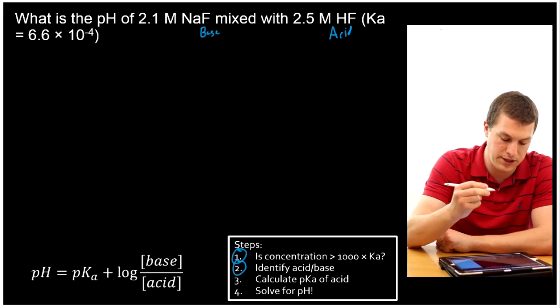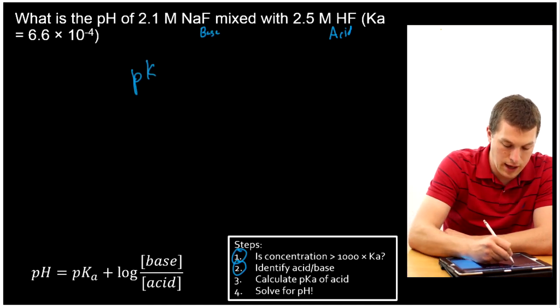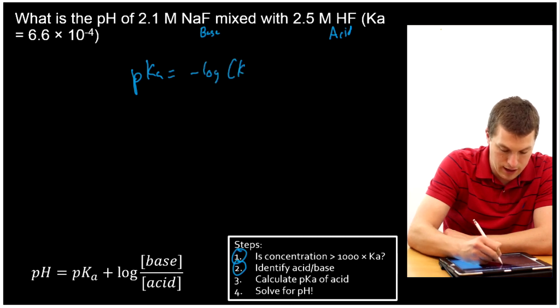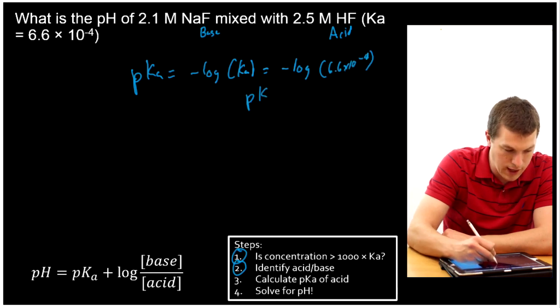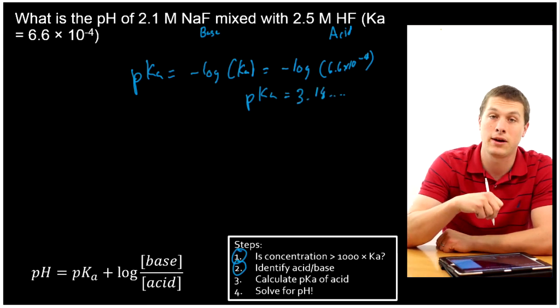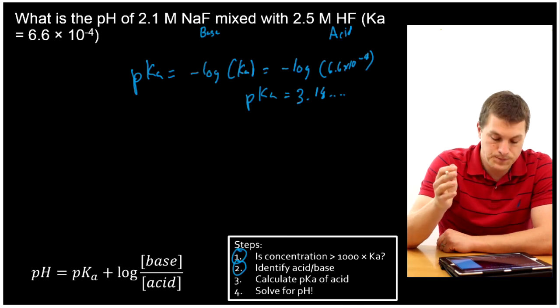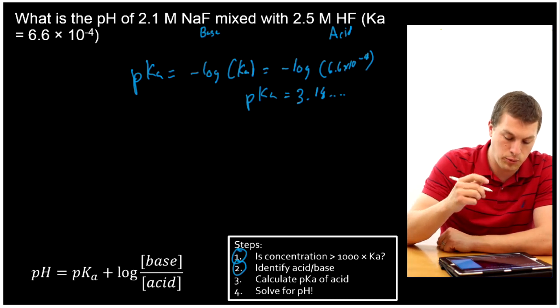And then we want to calculate the pKa. So pKa is just equal to the negative log of Ka. In this case, that's negative log of 6.6 times 10 to the minus 4. And we'll get for our pKa 3.18. I'll keep the other digits around in my calculator so I don't round them off here.